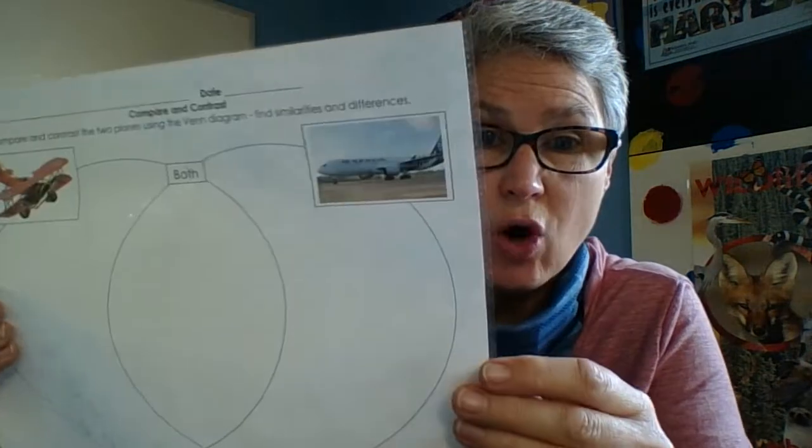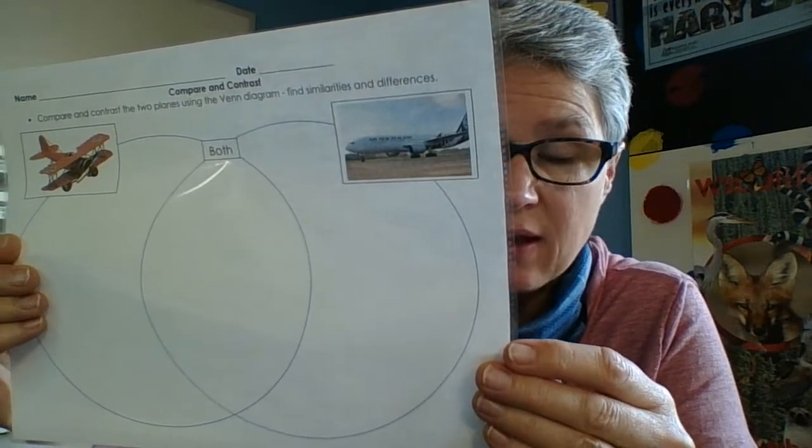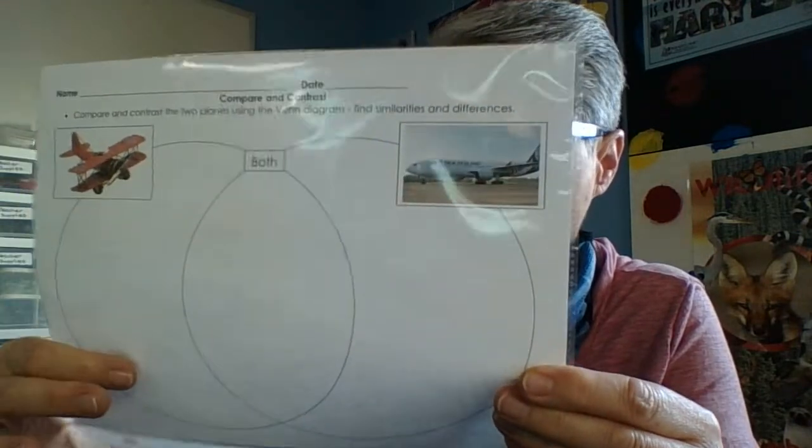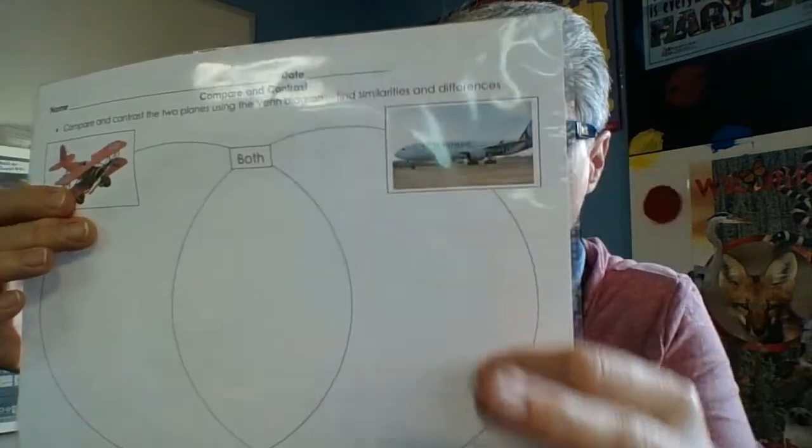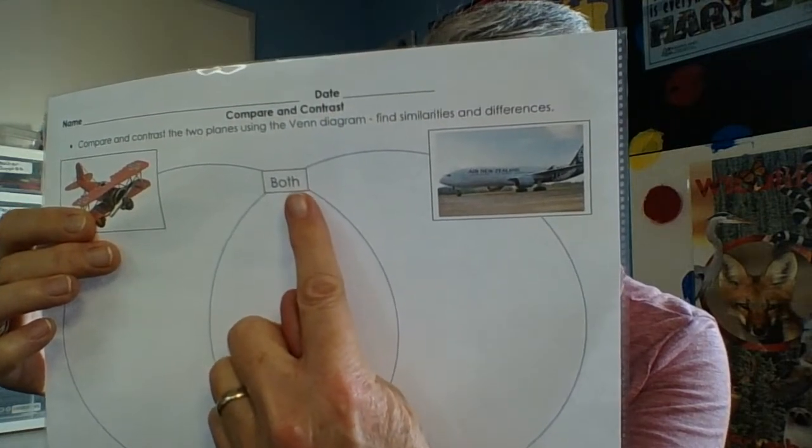A Venn diagram is when you have two overlapping circles that shows there should be information for just one plane, just the other plane, and then things that you can see on both of the planes.